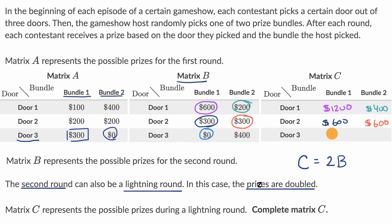Instead of $0 here, zero times two is still $0. And then last but not least, instead of $400, that times two is going to be $800.